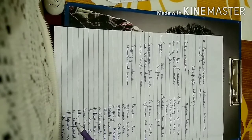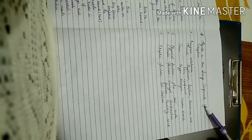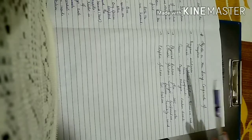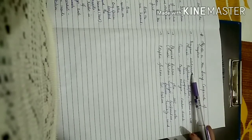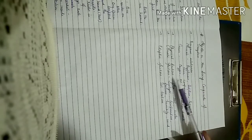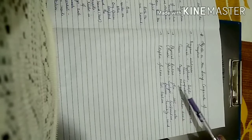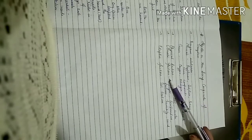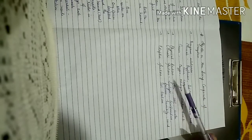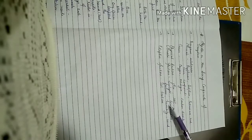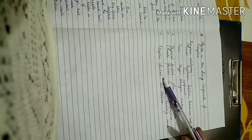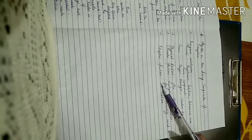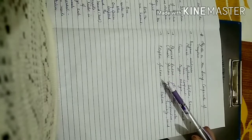Abiotic (non-living) components of an ecosystem include: inorganic substances such as minerals and gases; physical factors such as air, soil, and water; climatic factors such as sunlight, temperature, pressure, humidity, and wind; and edaphic factors, which relate to soil — its type and texture. That's all for today, take care.